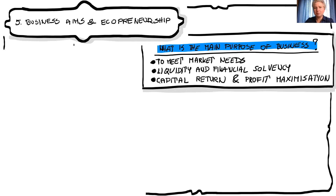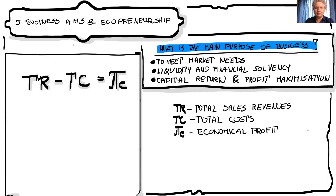From the point of view of the entrepreneur and the businessman, the main purpose is to gain more than was invested — first, capital return, and then profit maximization. How we get the profit is a very simple equation: we compare total sales revenues with total costs, total investment costs, and we have economic profit — but only if sales revenues are higher than total invested costs.